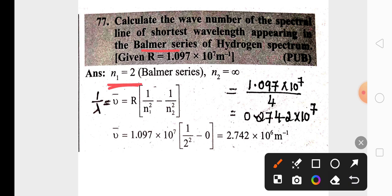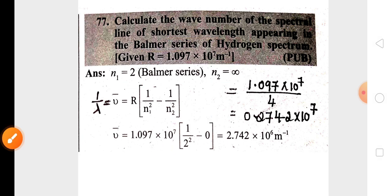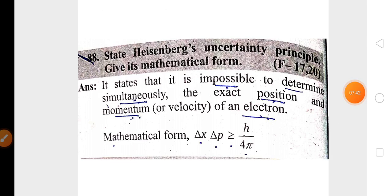For the hydrogen spectrum, if the Balmer series is given, n₁ value is 2. For the shortest wavelength, n₂ value is infinity, meaning 1/n₂² equals zero. Substitute n₁, n₂, and the Rydberg constant value given in the question to find the wave number. This is very important. For two marks, Heisenberg's uncertainty principle and its formula are also very very important.